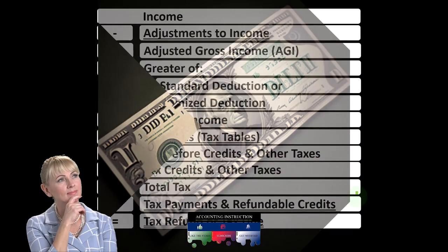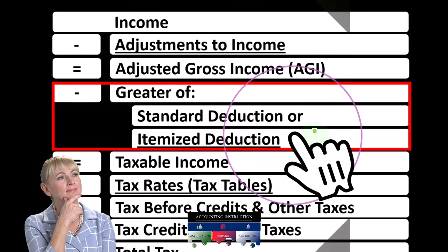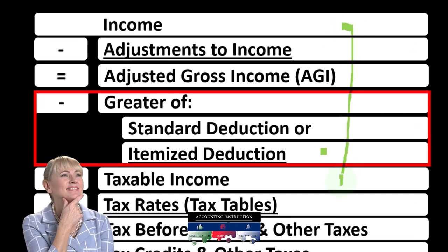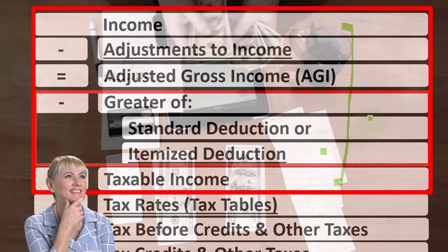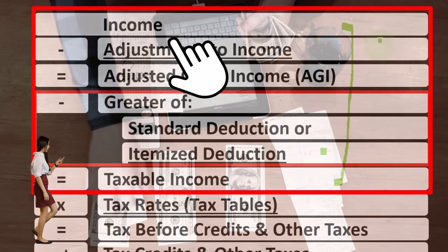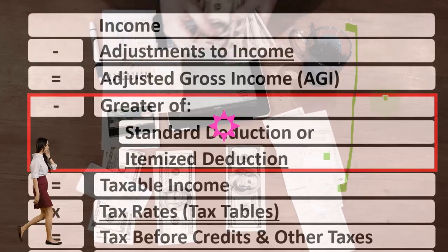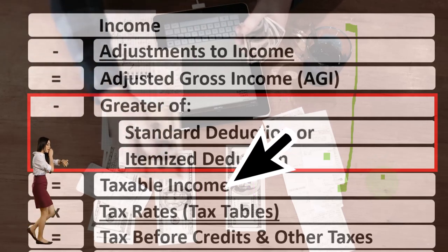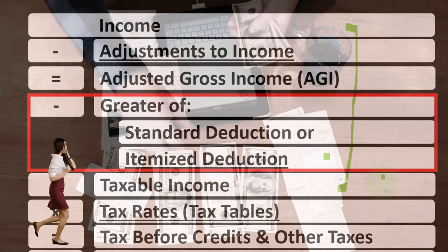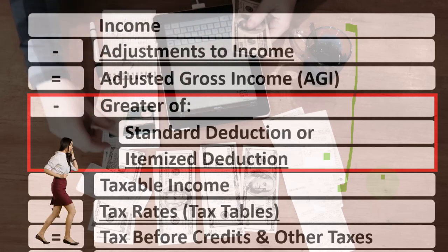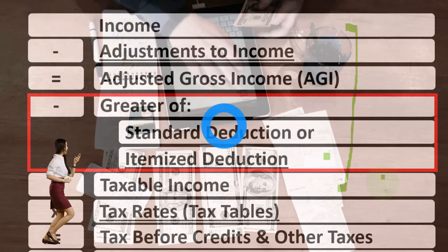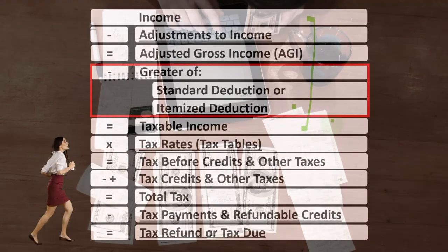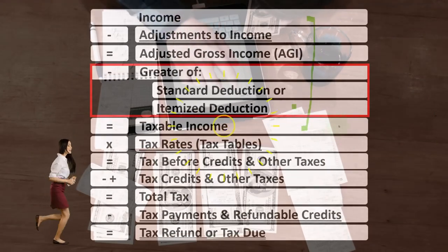Looking at the income tax formula, we're focused on the itemized deductions, remembering that the first half of the income tax formula is in essence an income statement where we have income minus the equivalent of the expenses — those being the deductions — equals the equivalent of net income, that being taxable income. Except everything's topsy-turvy, upside down for taxes: we want taxable income to be as low as possible, as opposed to net income where we normally want it to be as high as possible.